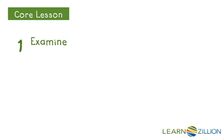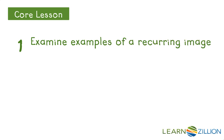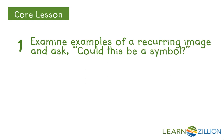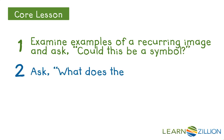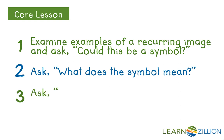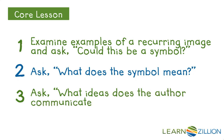Symbols used in literature are often used more than once. So our first step will be to recognize that a recurring object may be being used by the author as a symbol. Our second step will be to try to figure out what the symbol means figuratively. And our final step will be to ask ourselves, what ideas does the author communicate by way of the symbol?